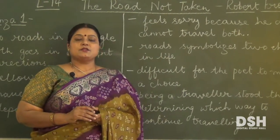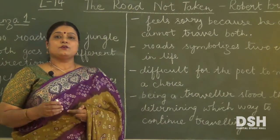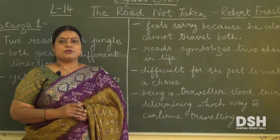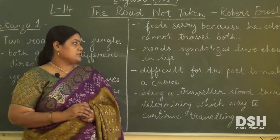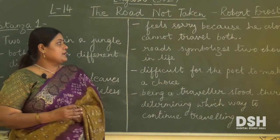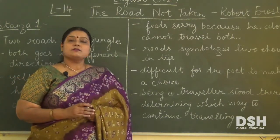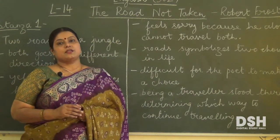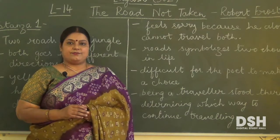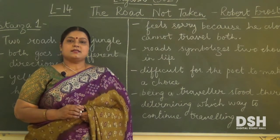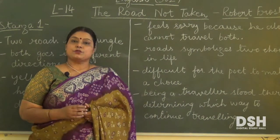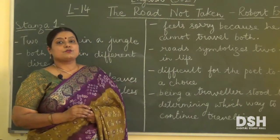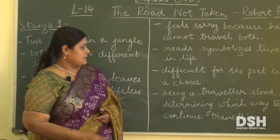Then he felt sorry, because he was alone and he alone could not travel both the roads. So there he had to make a decision. The road here symbolizes the two choices of which he had to make in his life. Since he being alone could not travel both the roads, he has to decide for one road on which he will travel.